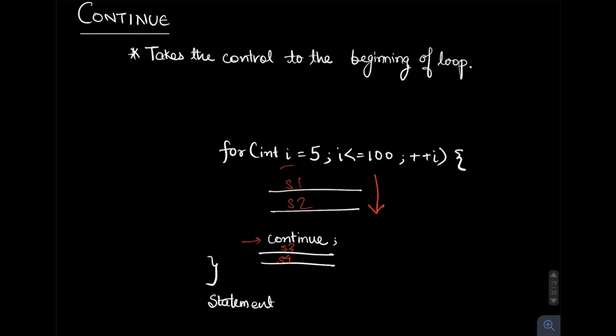As soon as continue is encountered, the control will flow to the for statement—the beginning of the loop. In case of for it's the for statement, in case of while it's the while statement. So the control passes to the beginning of loop and these two statements get skipped.